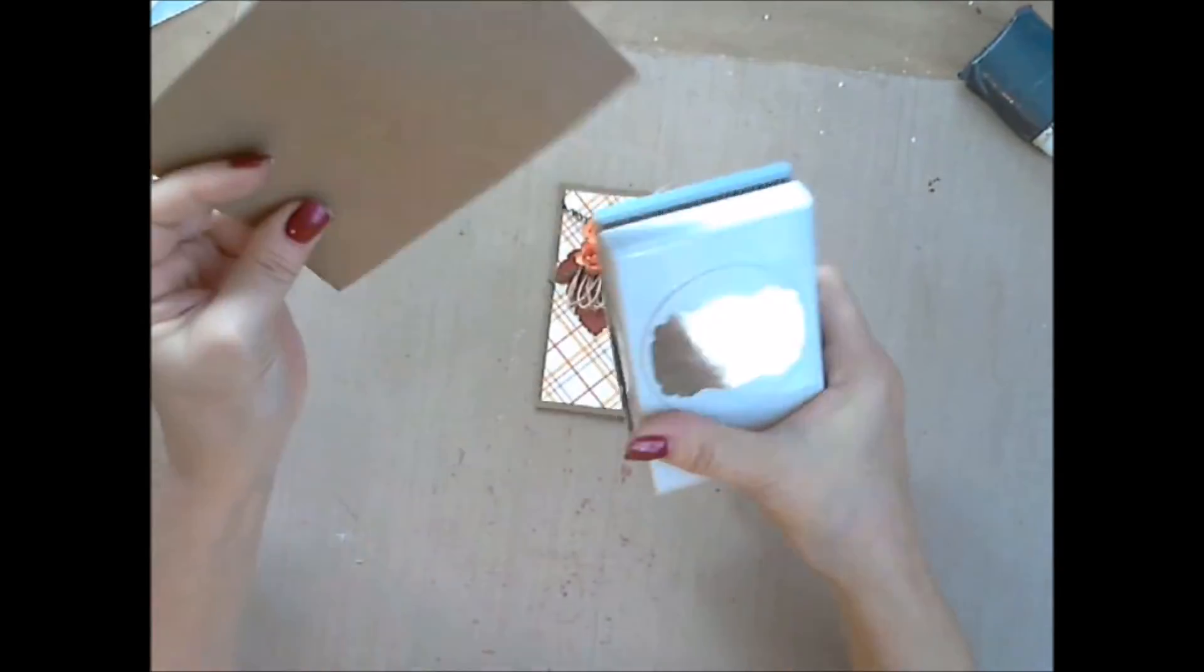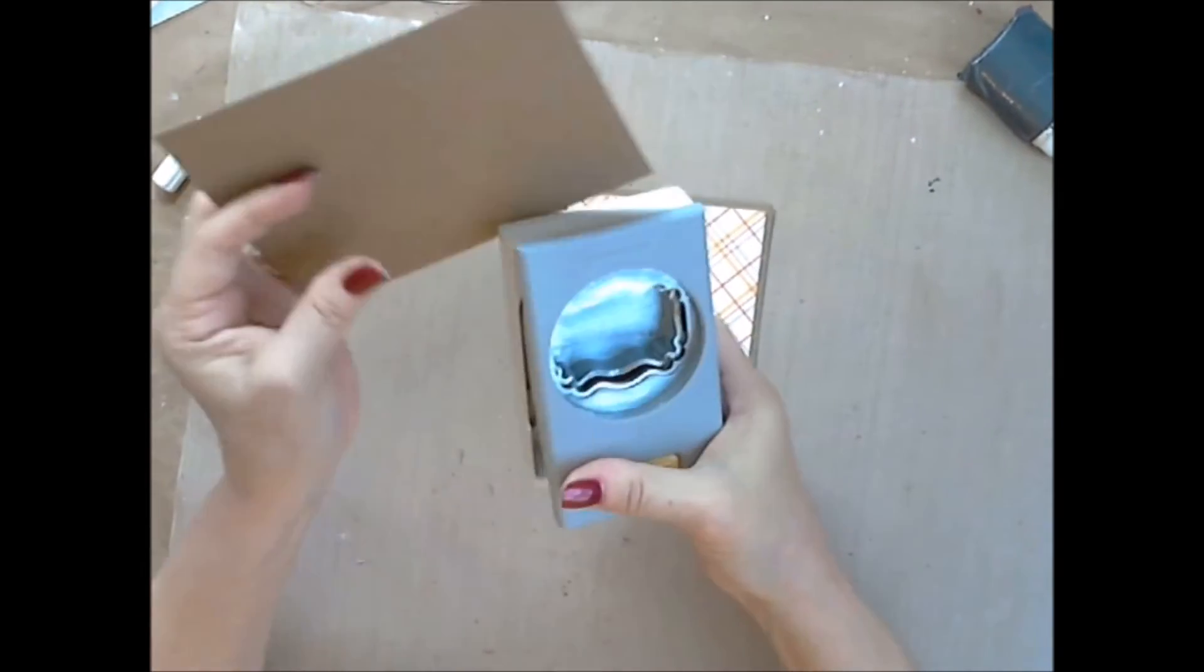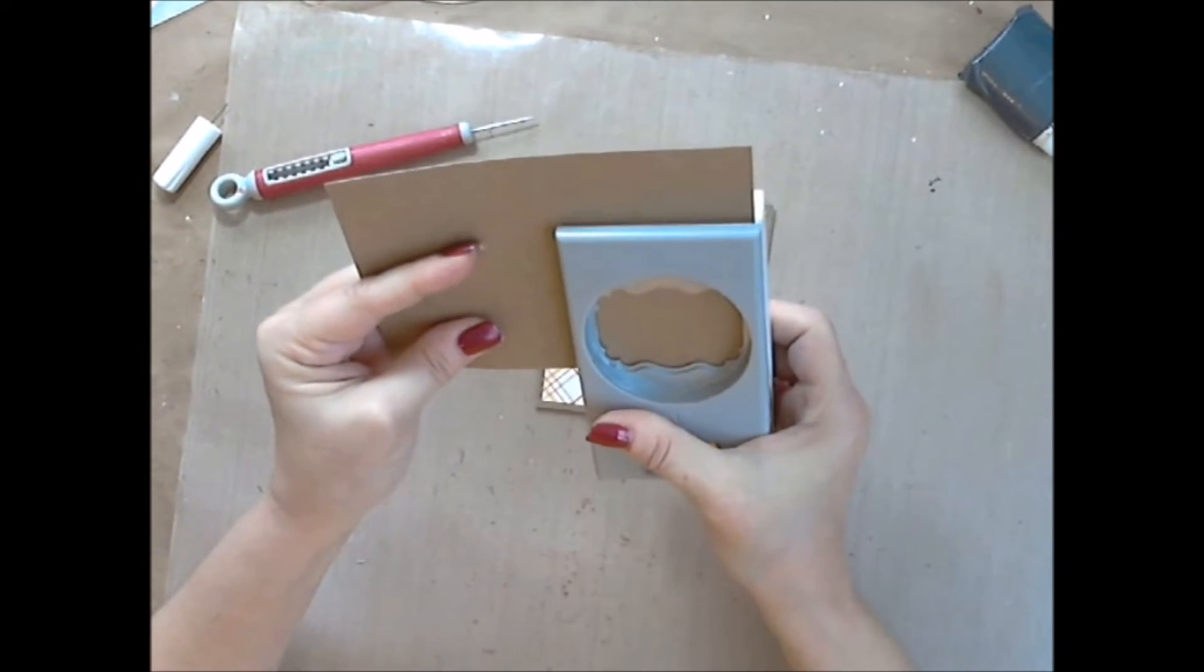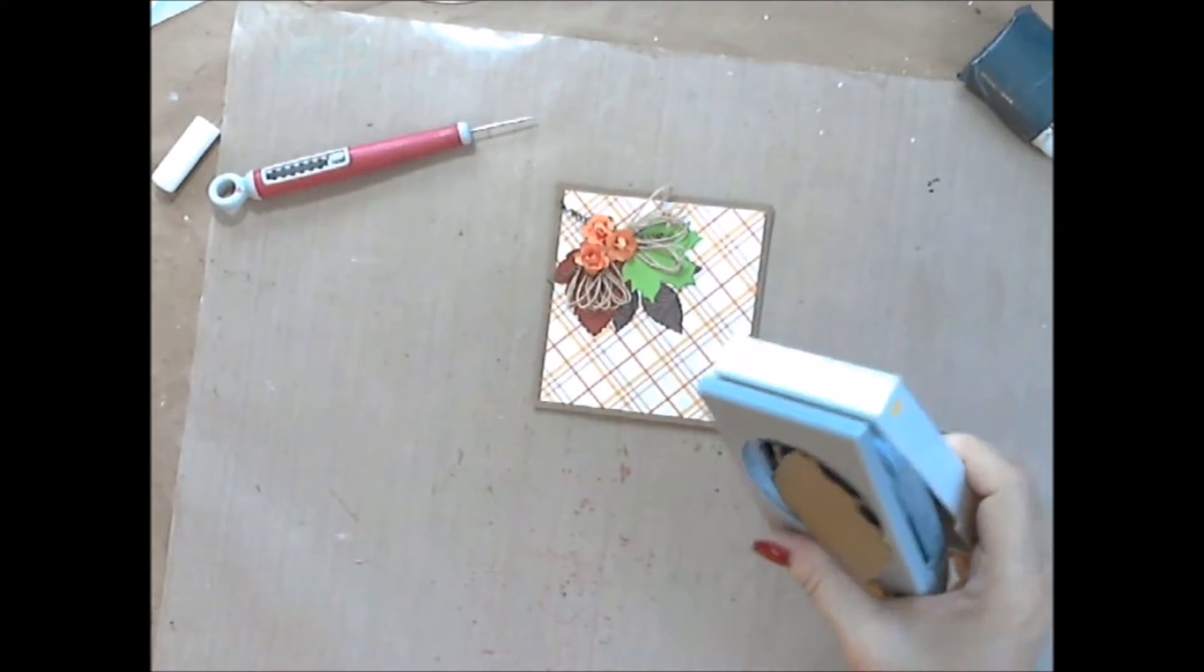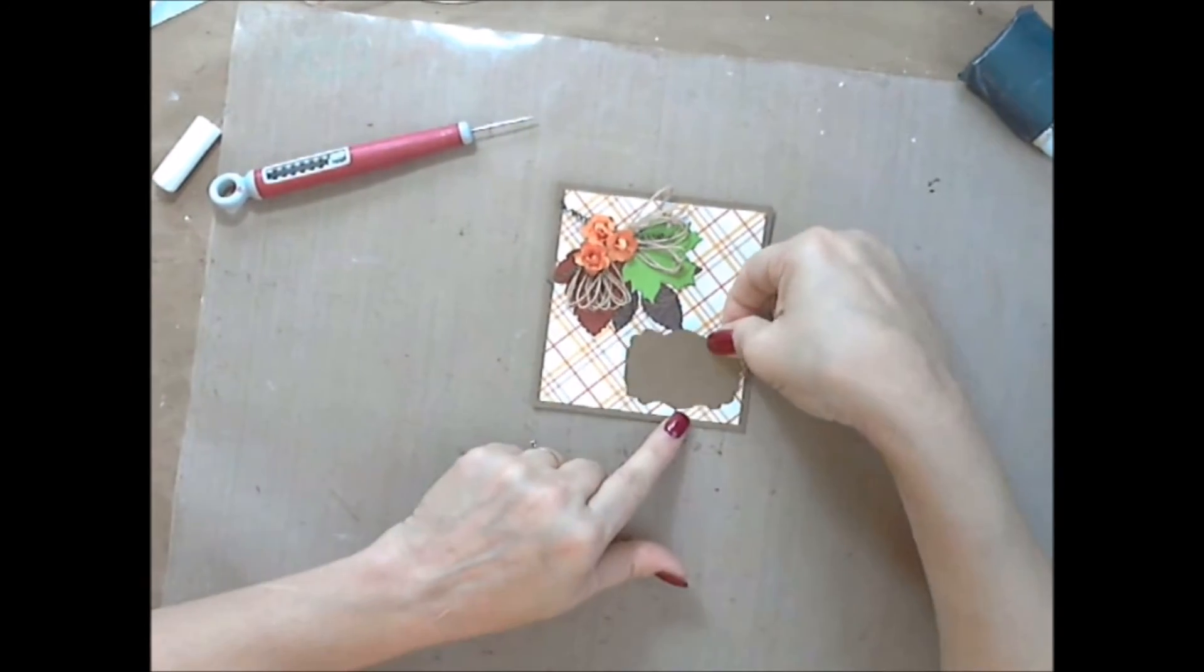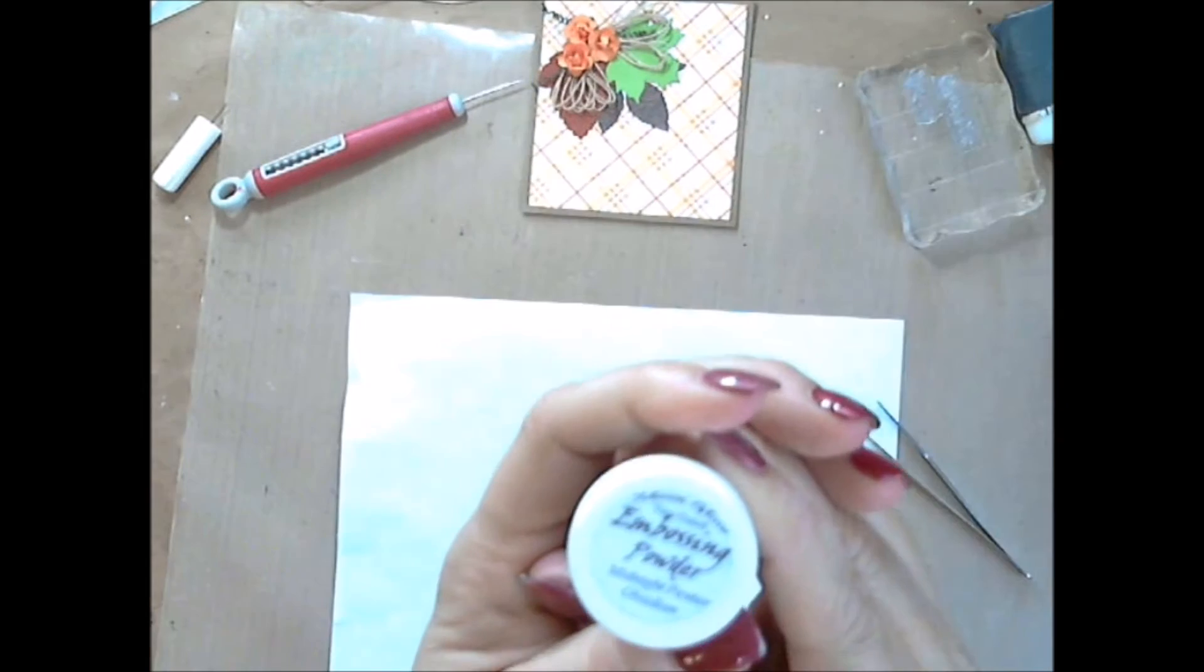Here I'm taking a piece of cardstock and a punch from my stash and punching out a little label. I'm going to use this to put my sentiment on and lay it on the card. I'm checking to make sure it fits, and it does perfectly.